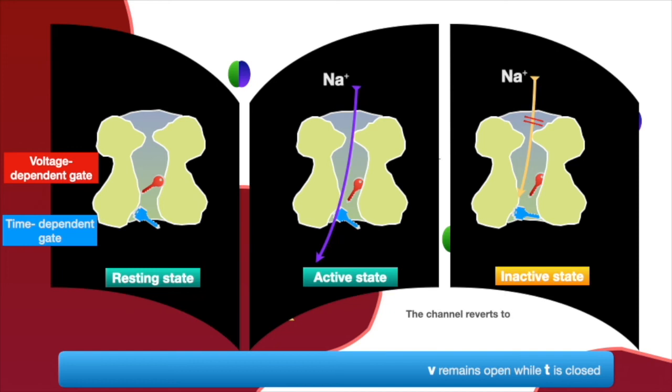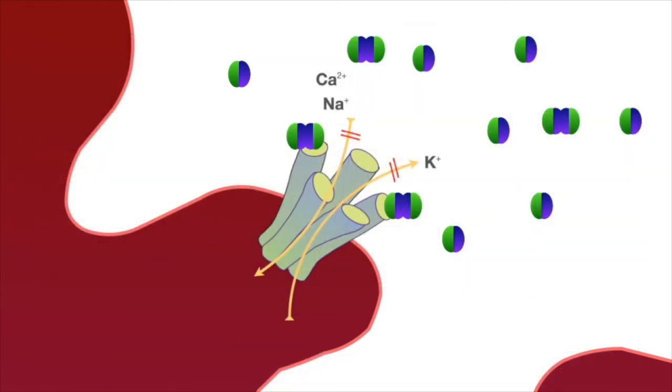The channel reverses to the resting state when the membrane repolarizes. Now we know the membrane potential must be reset before sodium channels can be reactivated. This is a very rapid process with acetylcholine as it is hydrolyzed by acetylcholine esterase within the synaptic cleft.